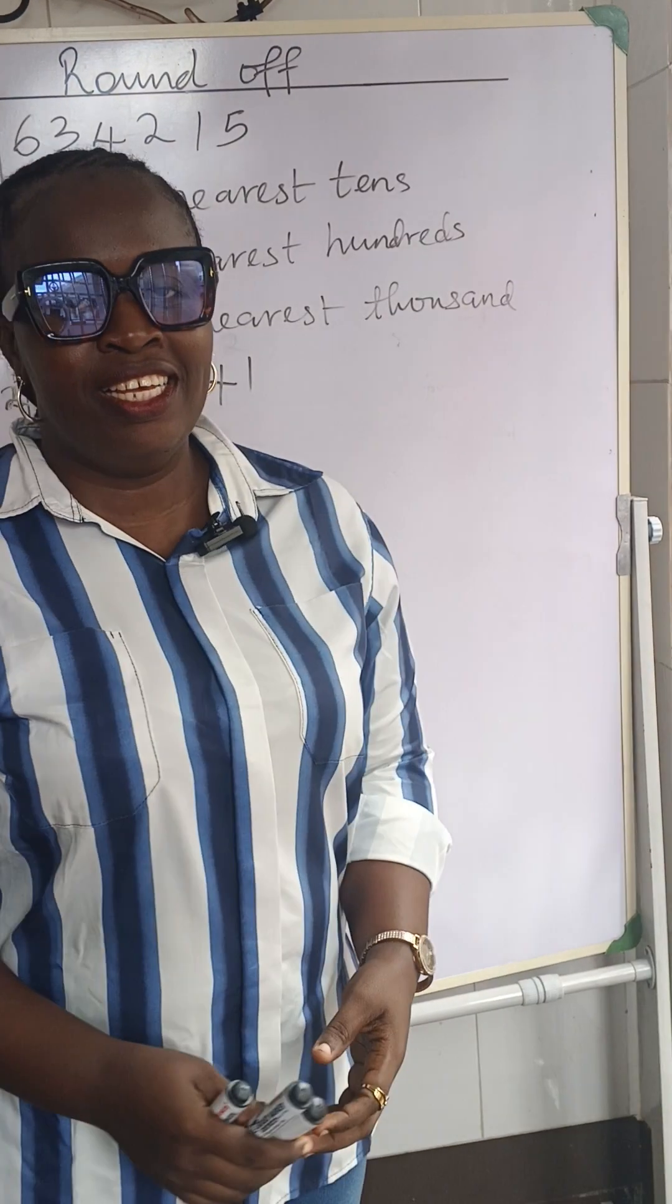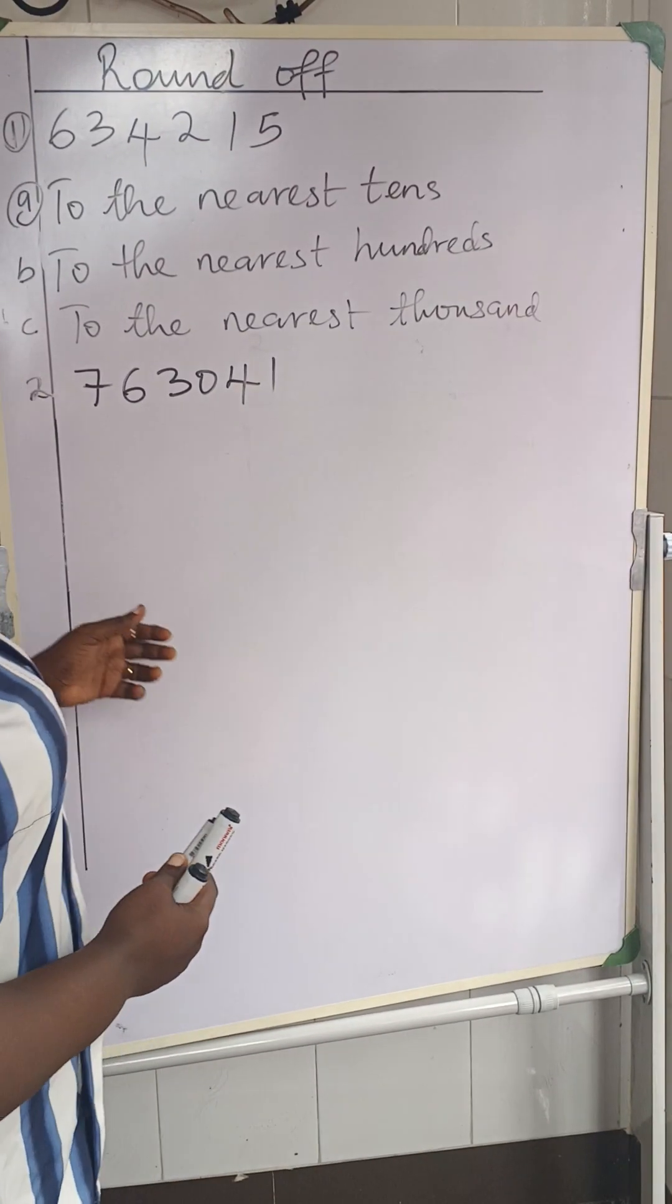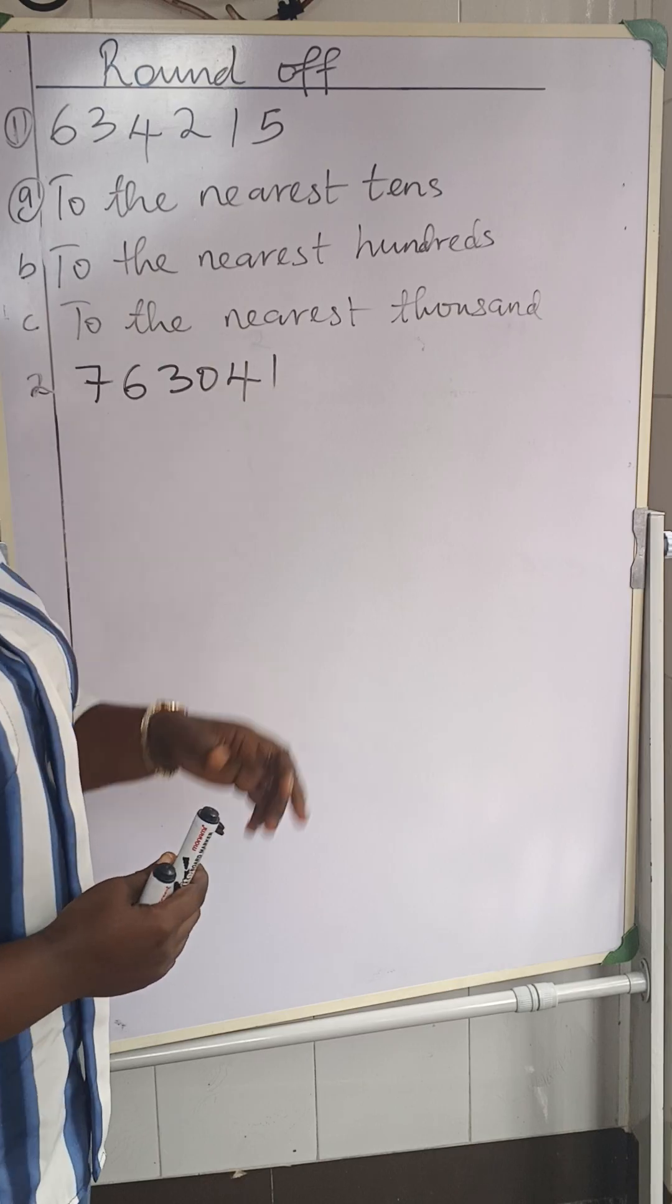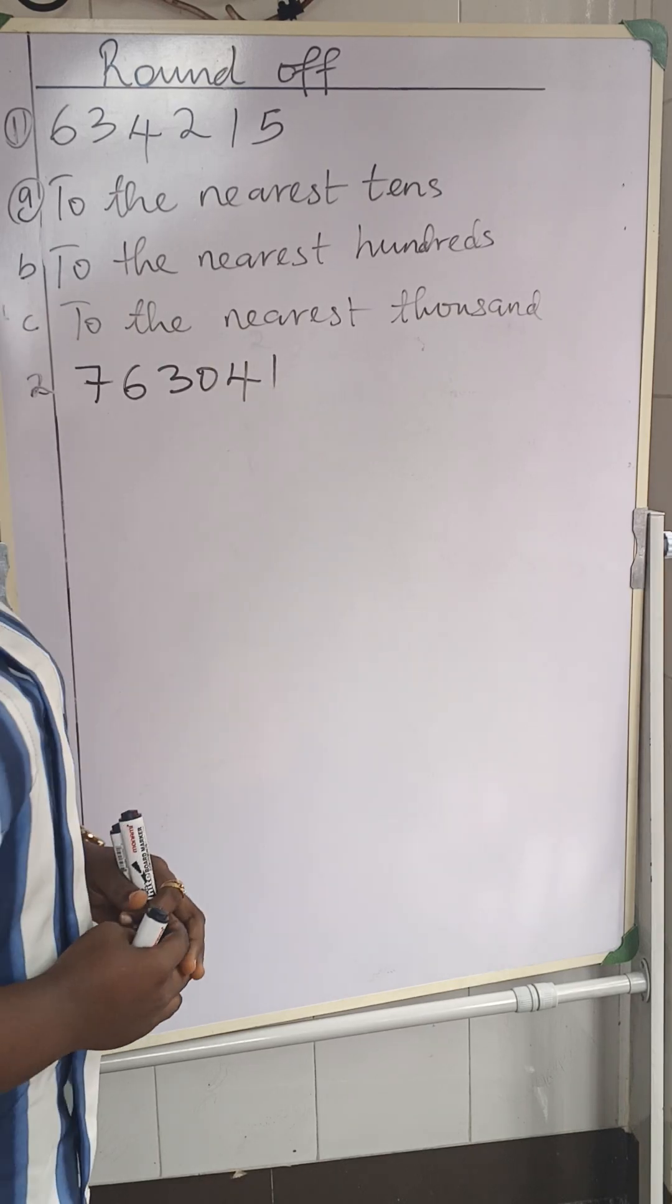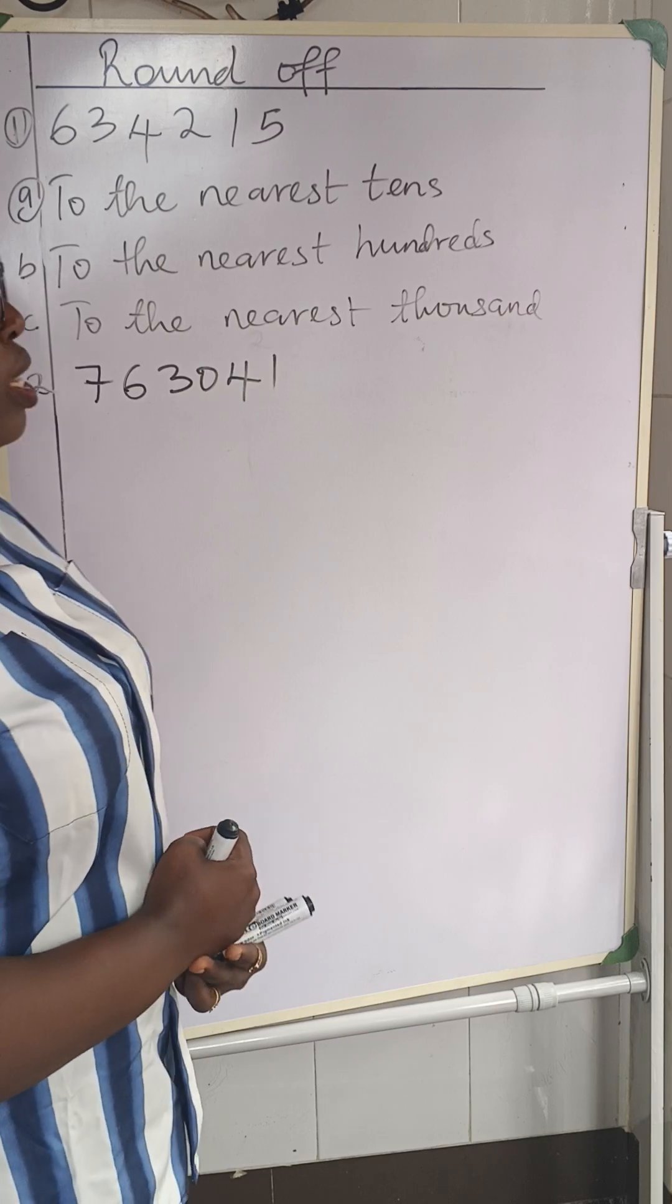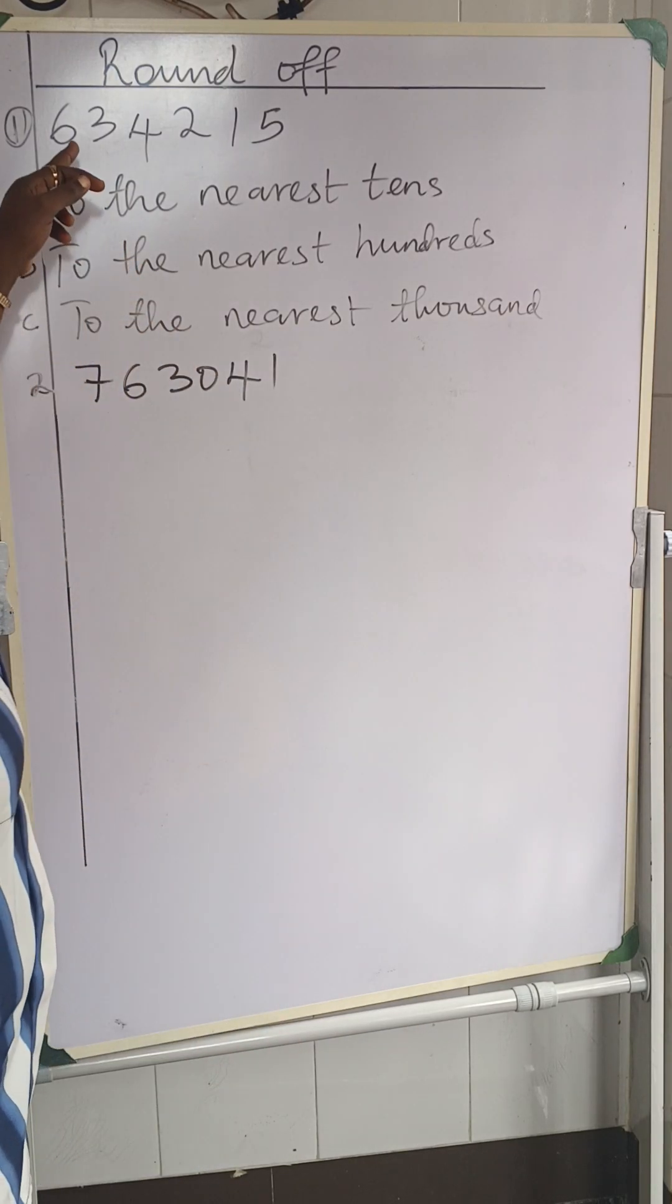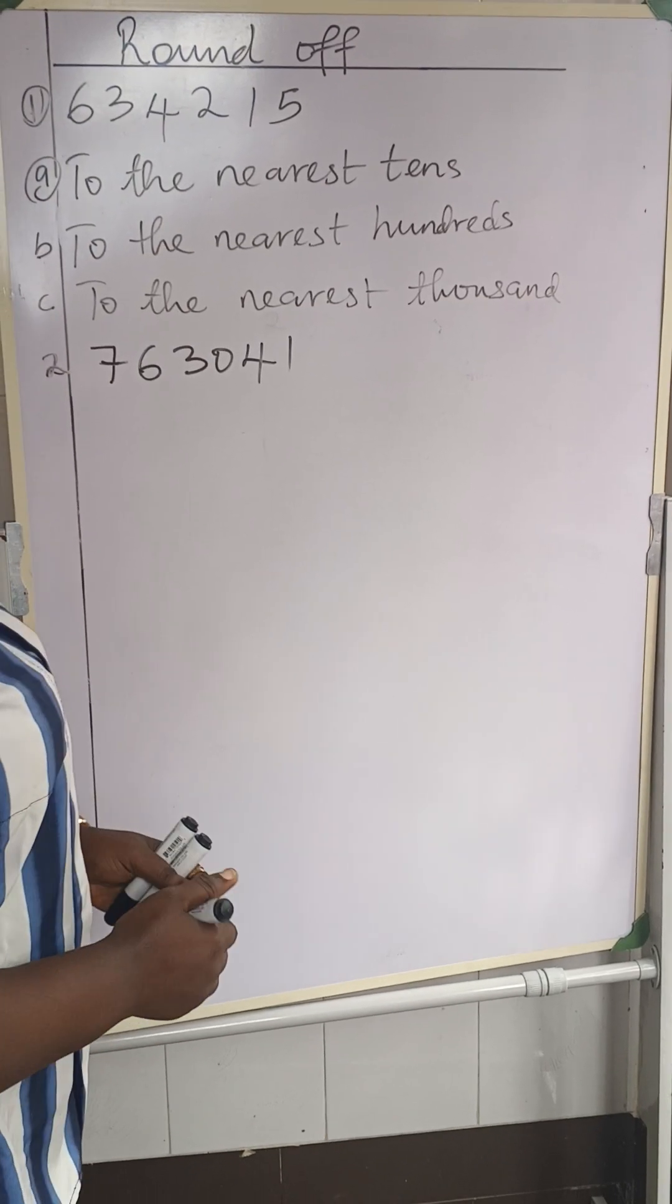Hello, let's look at rounding. I want to round off this number: A to the nearest tens, B to the nearest hundreds, and finally C to the nearest thousands. And what number are we using?